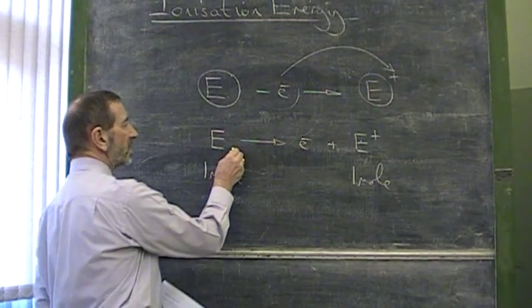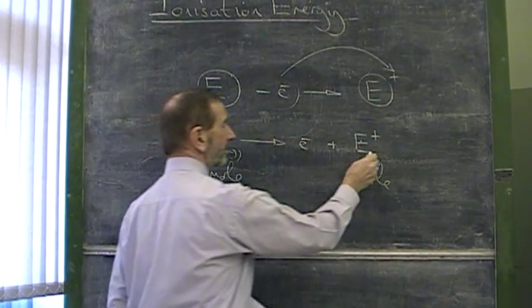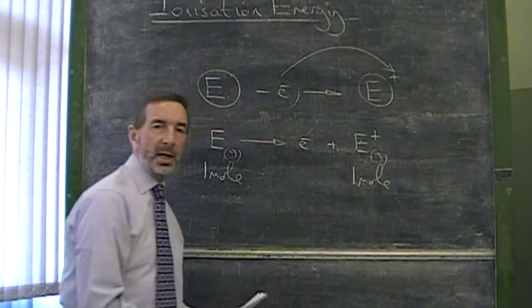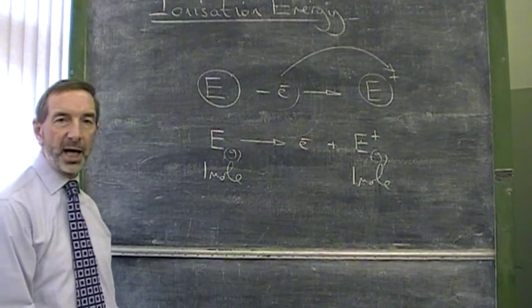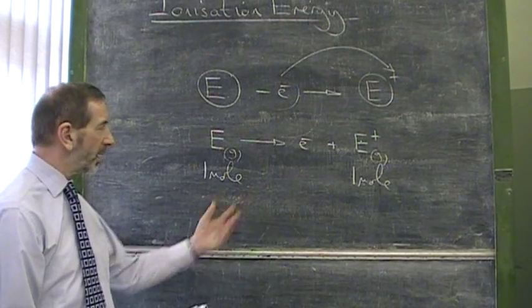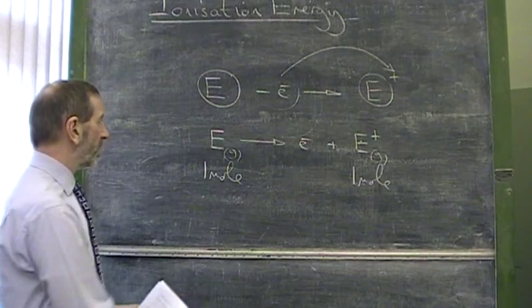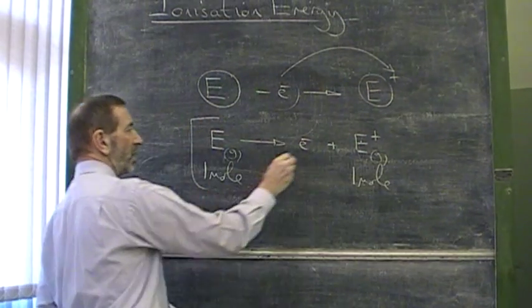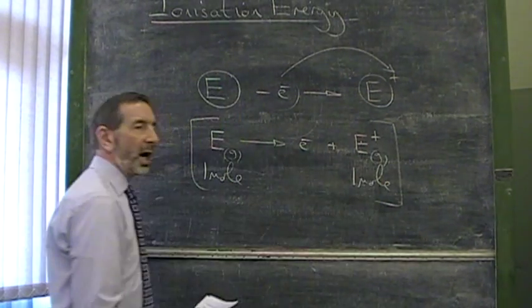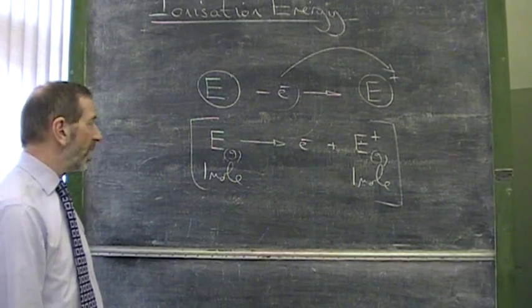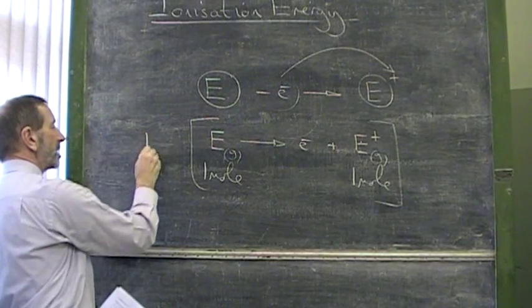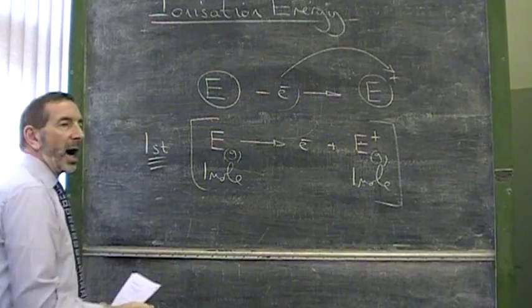Furthermore, this has to be gas. The element may be a gas naturally, or in most cases it has to be turned into a gas before this process can be carried out. So there you have it. There's the equation that represents an ionization energy. Strictly speaking, this represents the first ionization energy.